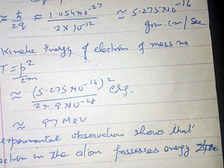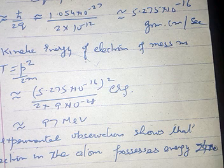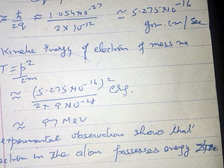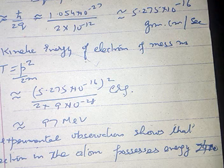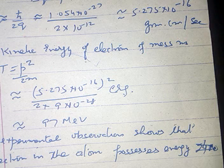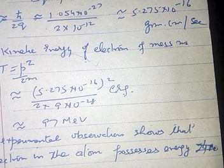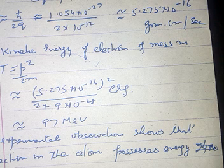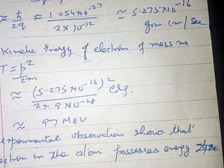Experimental observation shows that if the electron exists inside the nucleus, its kinetic energy must be of the order of 97 MeV. However, experimental observations show that no electron in the atom possesses energy more than 4 MeV. Clearly, the inference is that electrons do not exist in the nucleus.